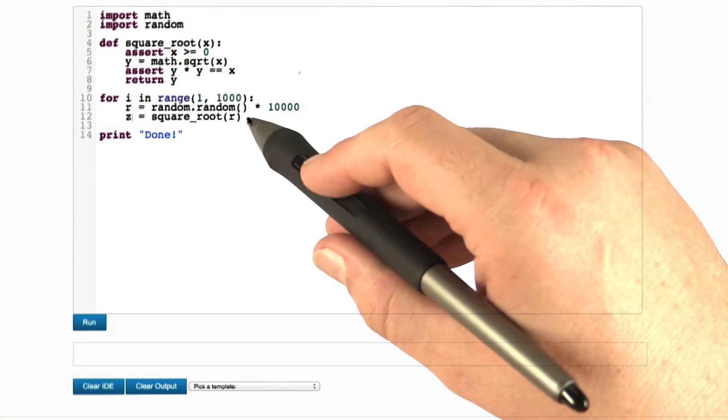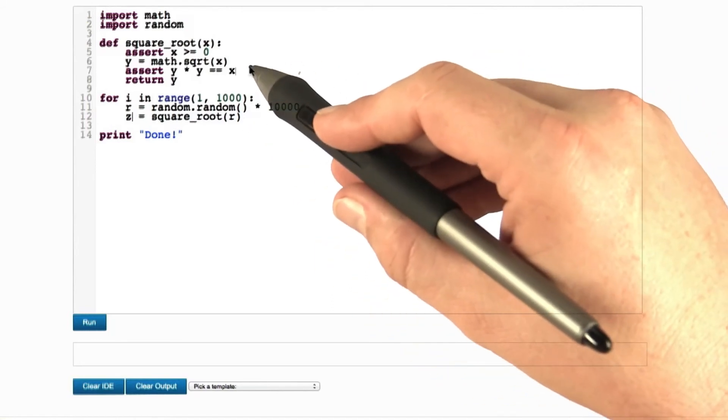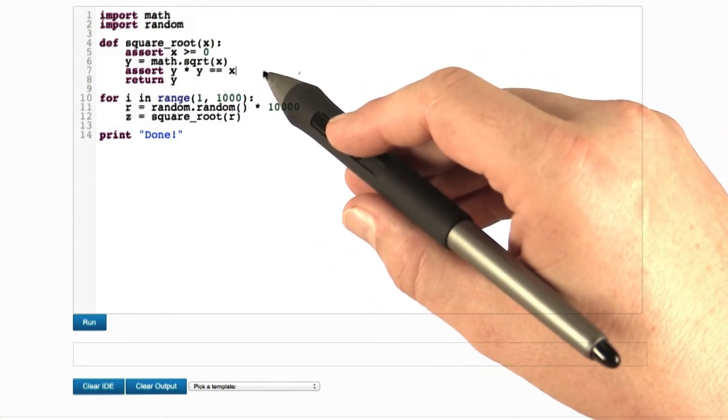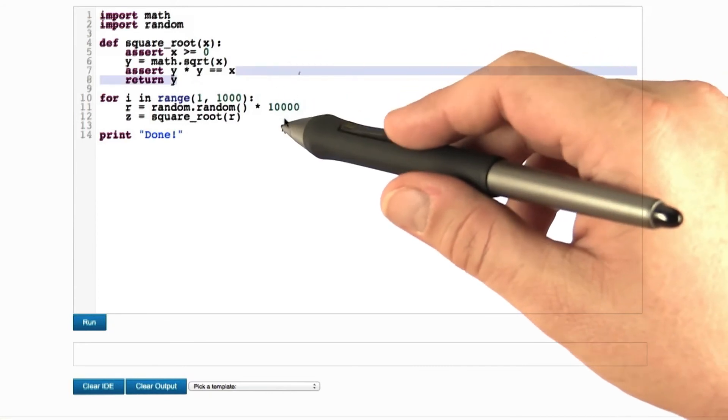Note that we don't do any assertions down here, because the assertions up here already take care of everything. When all tests are successful, we print out done.